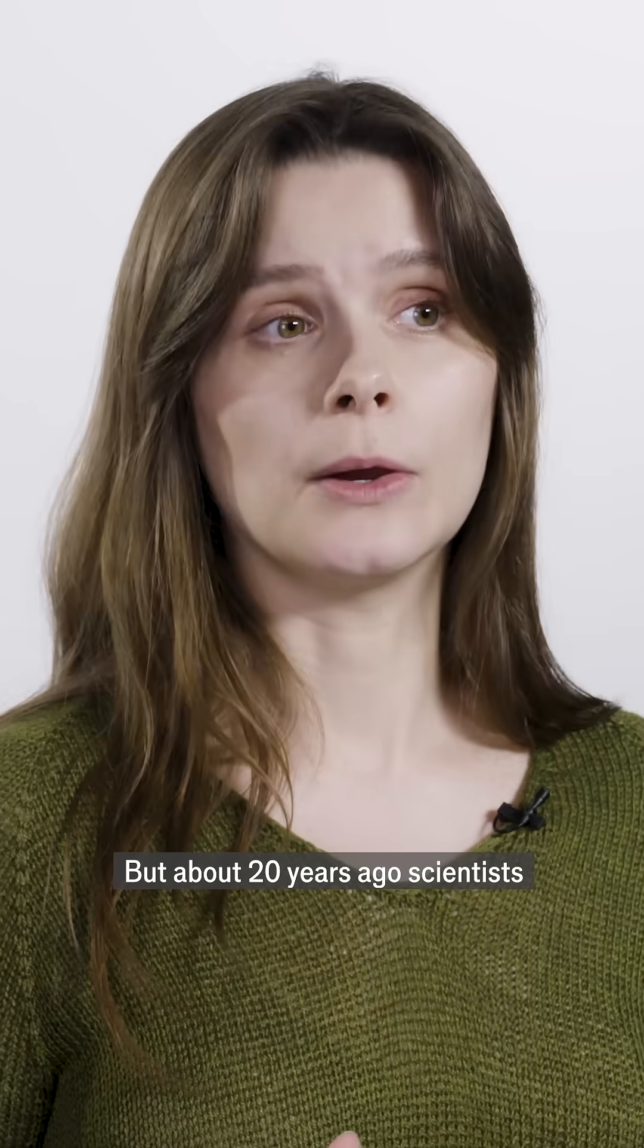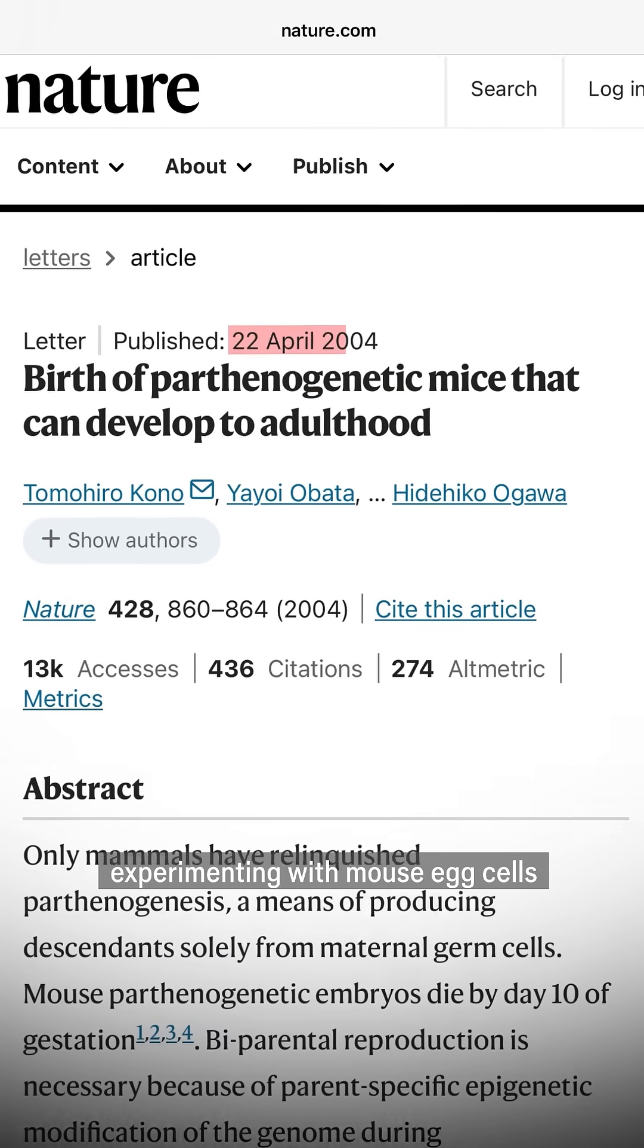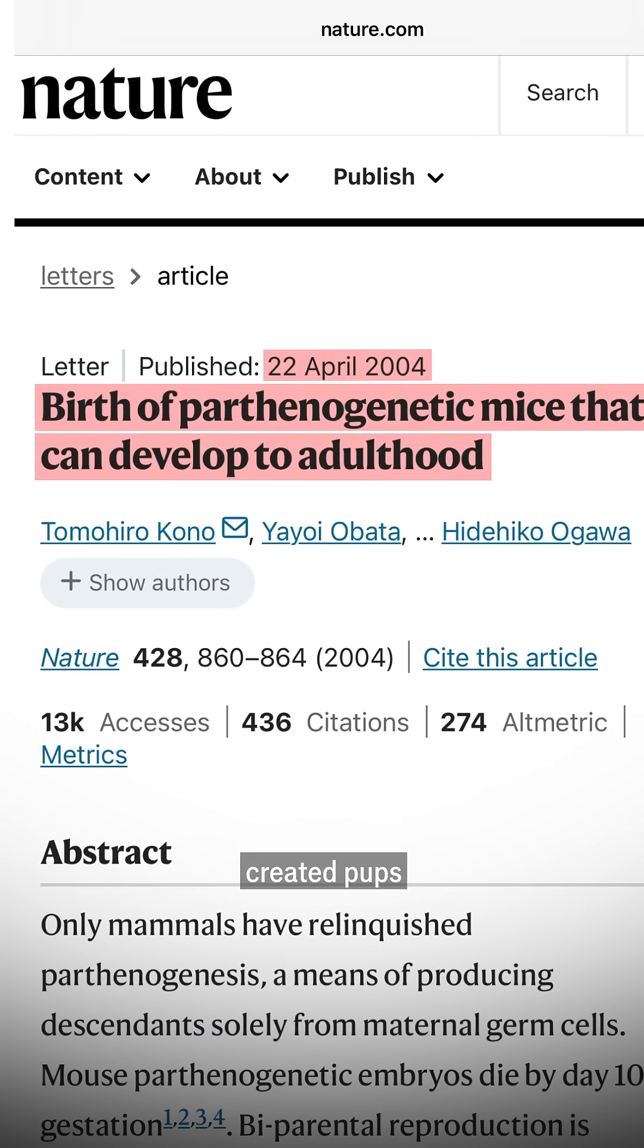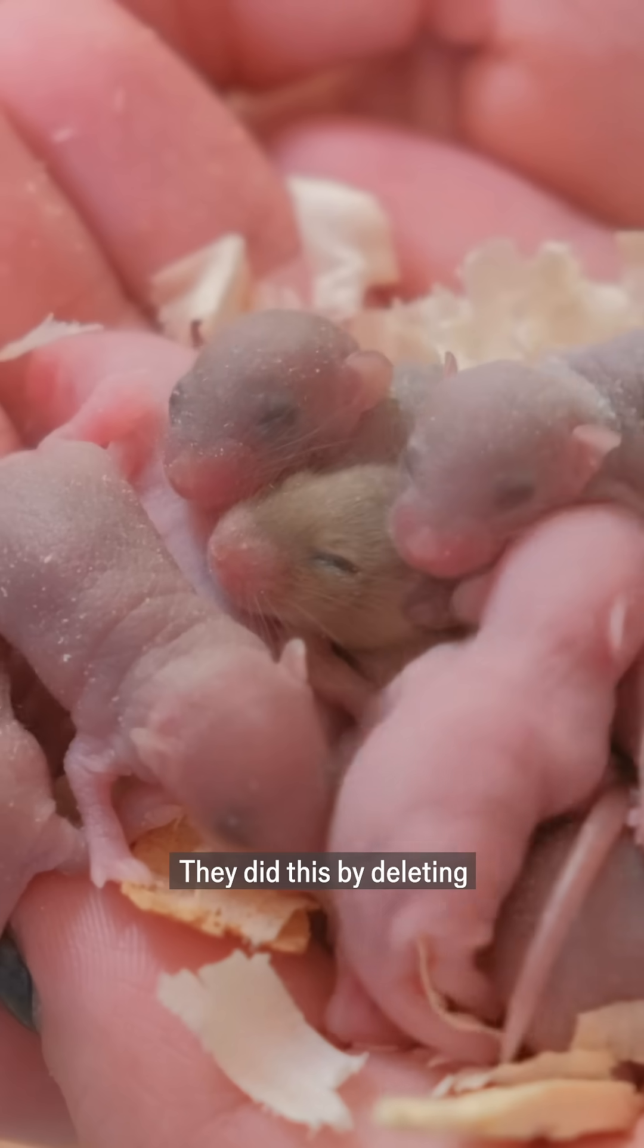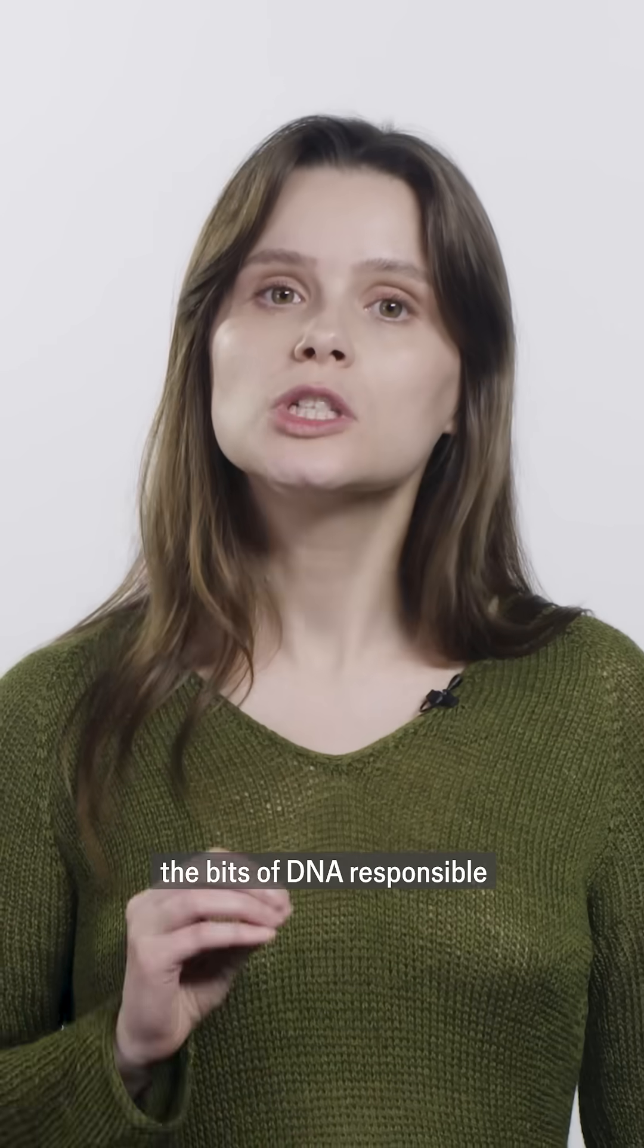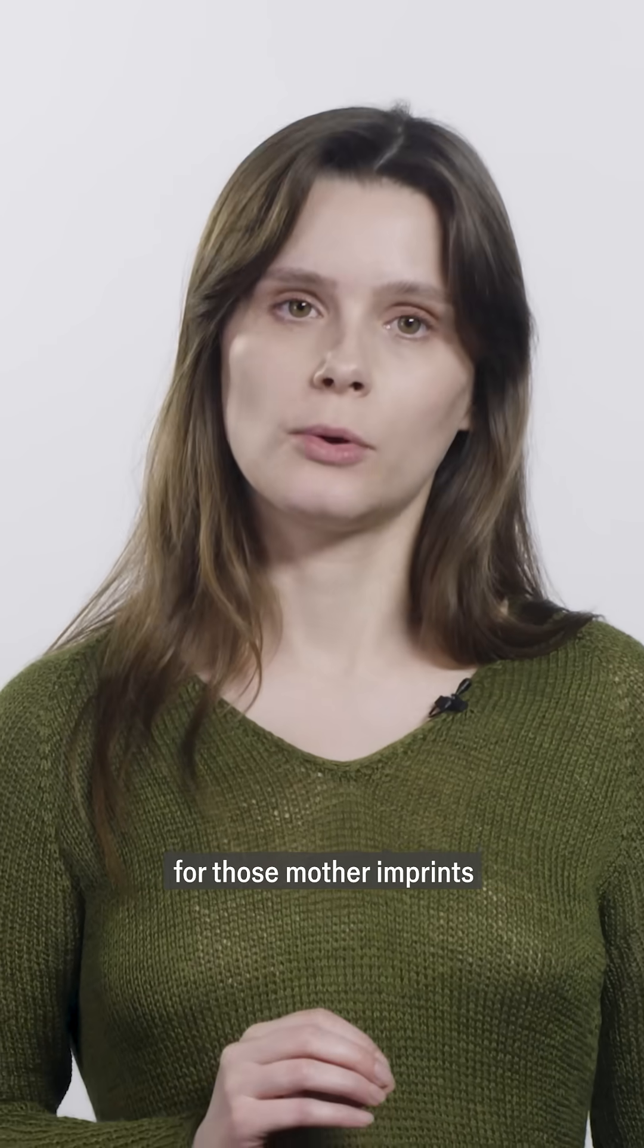But about 20 years ago, scientists experimenting with mouse sex cells created pups with two biological mothers. They did this by deleting the bits of DNA responsible for those mother imprints.